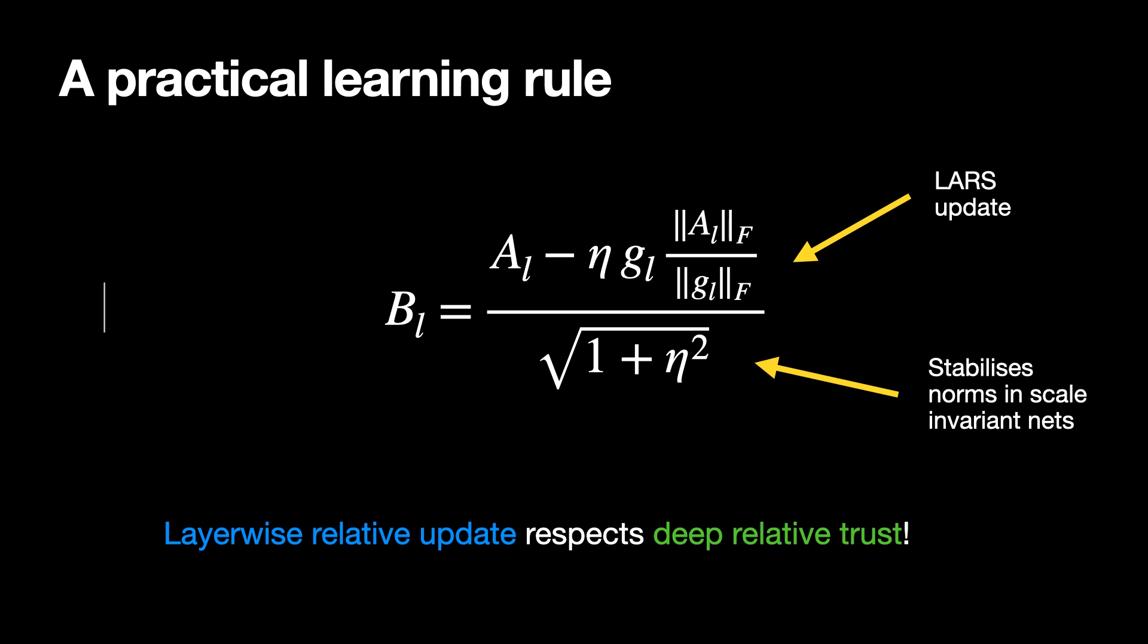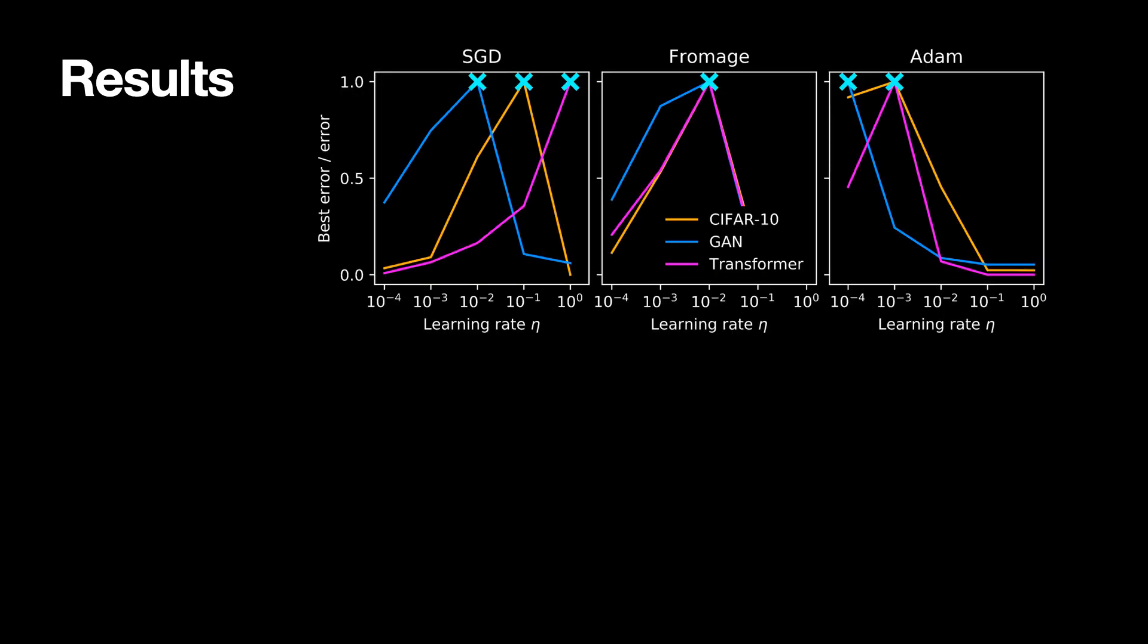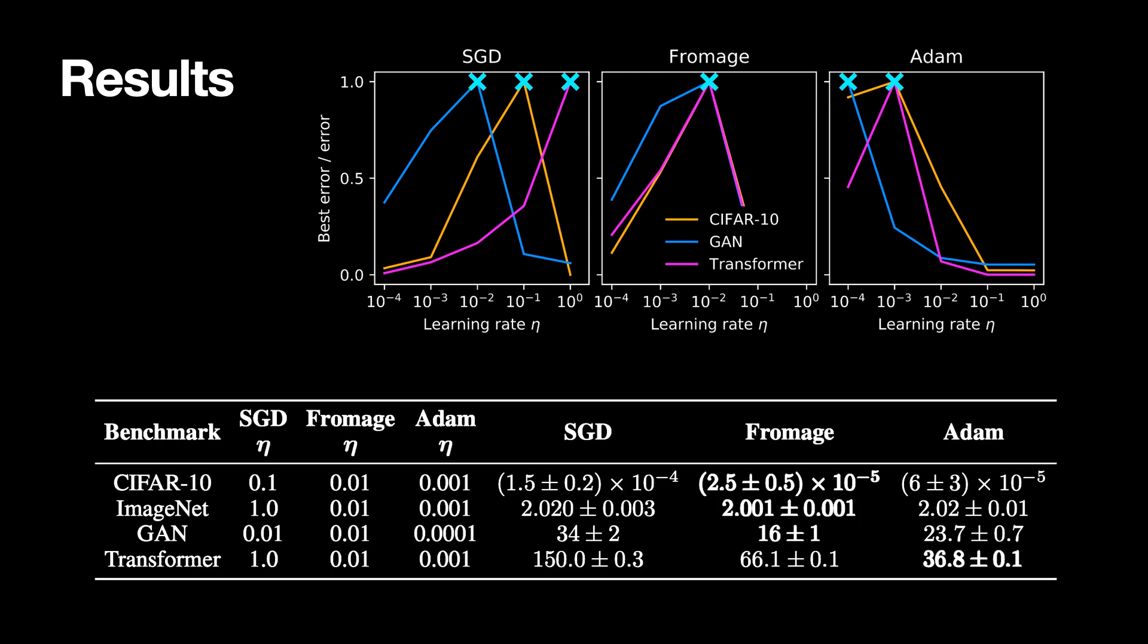We found that fromage did not require learning rate tuning across a range of benchmarks. And its training performance was often an order of magnitude better than SGD's.